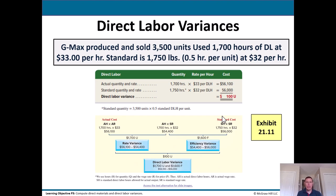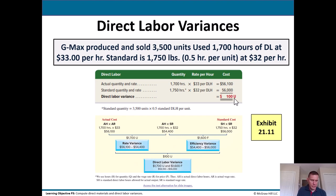Direct labor variances: G-Max produced and sold 3,500 units. They used 1,700 hours of direct labor at $33 per hour. The standard was 1,750 hours — 0.5 hours per unit — at $32 per hour. Plugging in numbers: actual cost = 1,700 × $33 = $56,100. Standard = 1,750 × $32 = $56,000. Direct labor variance is $100 unfavorable — not terrible, probably not something they'd worry about investigating much. Breaking down: 1,700 × $33 vs. 1,700 × $32 vs. 1,750 × $32 gives us a $1,700 unfavorable rate variance and a $1,600 favorable efficiency variance, netting to $100 unfavorable direct labor variance.